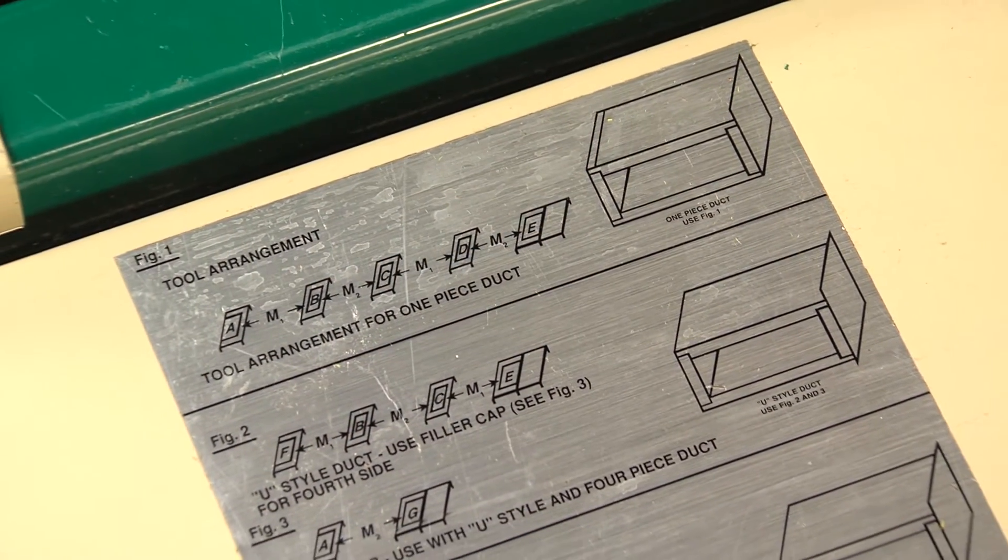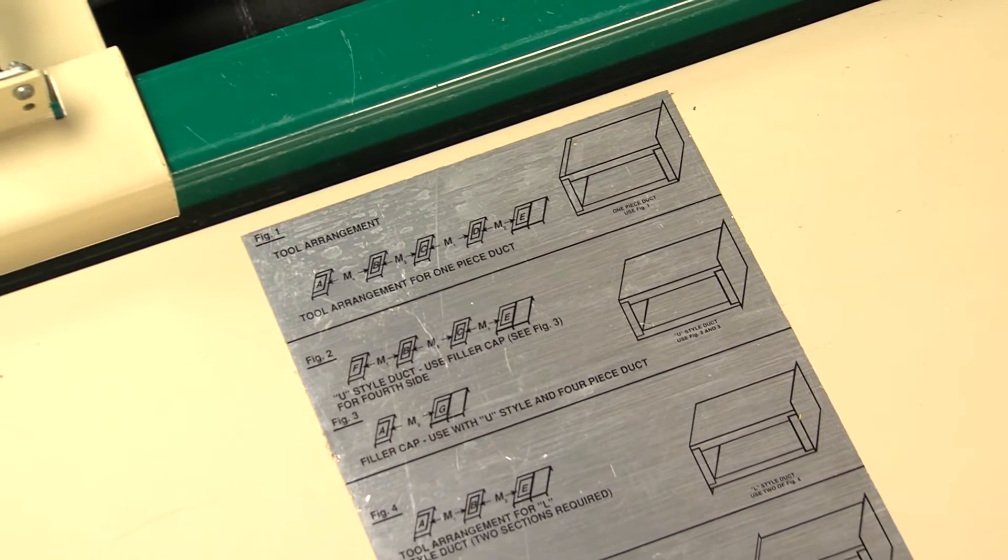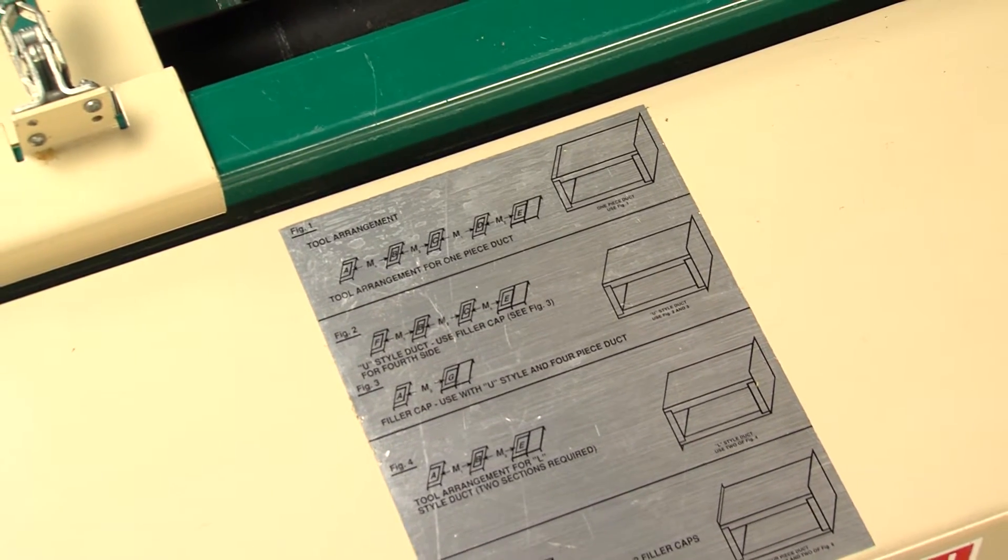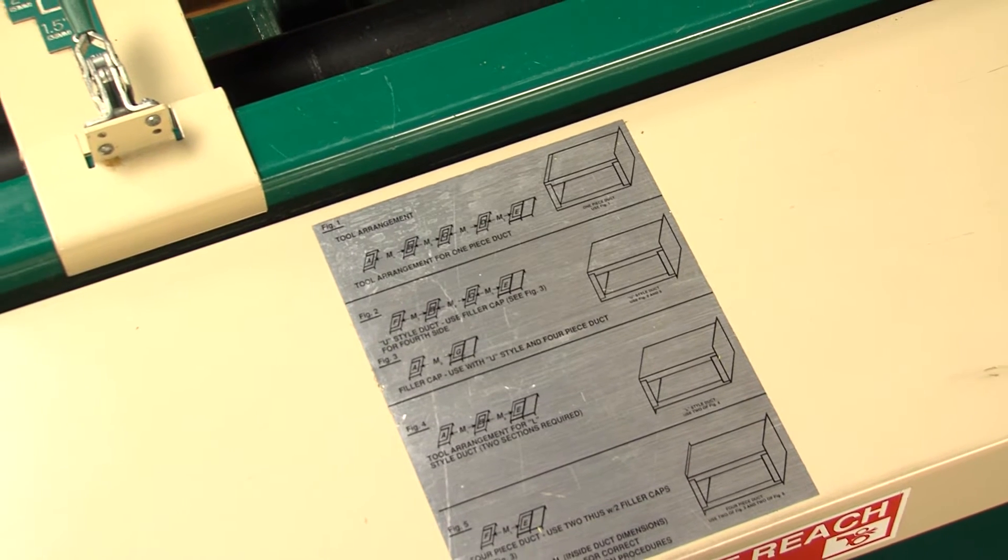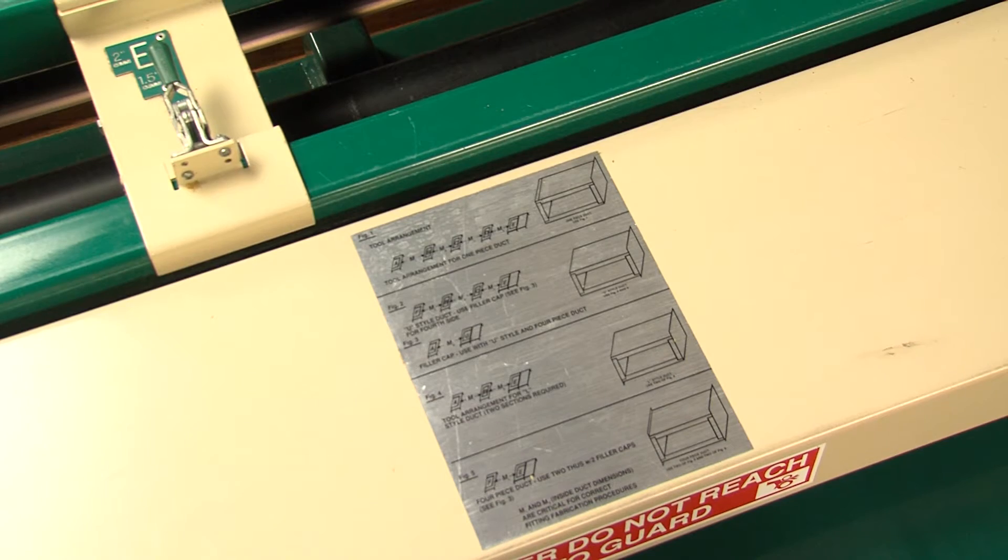The Glass Master machine comes equipped with a tool arrangement decal, a permanent cheat sheet that gives you the tool arrangement you need for one-piece duct, two-piece or U or L style ducts, or for four-piece ducts.